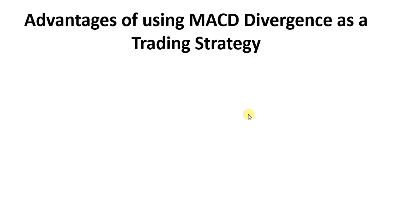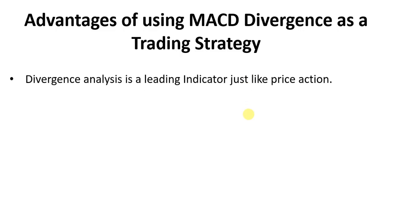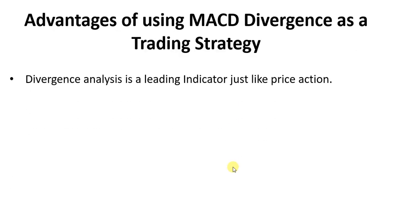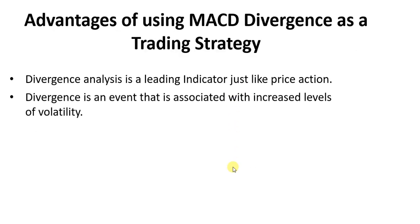Why do we want to use divergence as a trading strategy? The first advantage is that it's a leading indicator, just like price action. If you identify a divergence, it's already telling you that in the future the price might reverse, because the buyers are getting weaker with lower highs. So you can prepare for it. The second advantage is that it's associated with a high level of volatility, because many traders recognize and pile into positions when they identify a divergence.